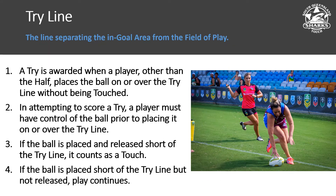The try line is a line separating the in-goal area from the field of play. A try is awarded when a player other than the half places the ball on or over the try line without being touched. In attempting to score a try, a player must have control of the ball prior to placing it on or over the try line — they cannot just dive and ground it from above as in league, since our game doesn't allow the ball to go to ground.